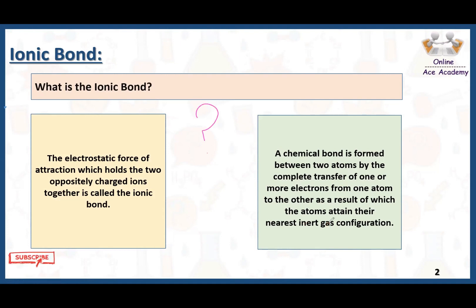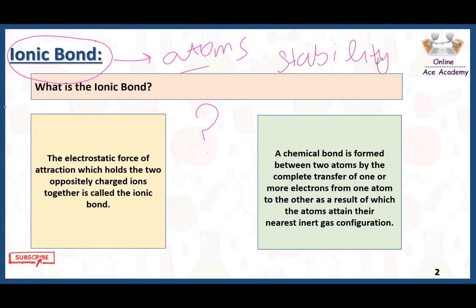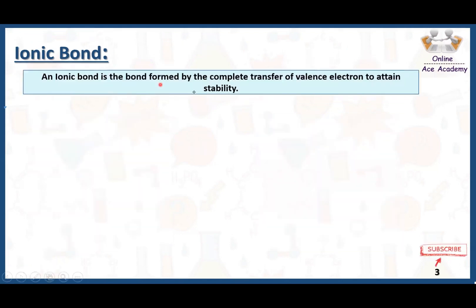Ionic bond is formed between atoms because everything in this universe wants to get stability. In order to get stable, atoms lose or gain electrons. After losing and gaining electrons, due to the force of attraction, a chemical bond is formed — that is called as ionic bond.